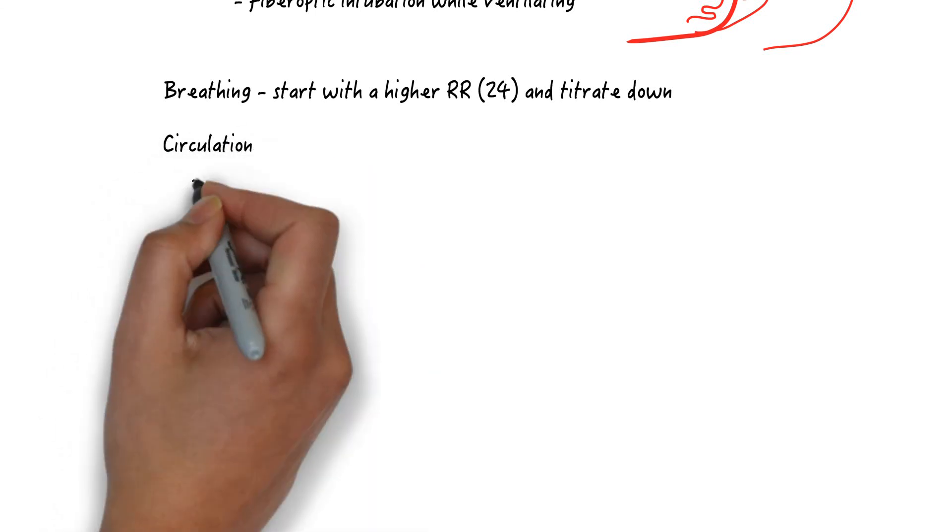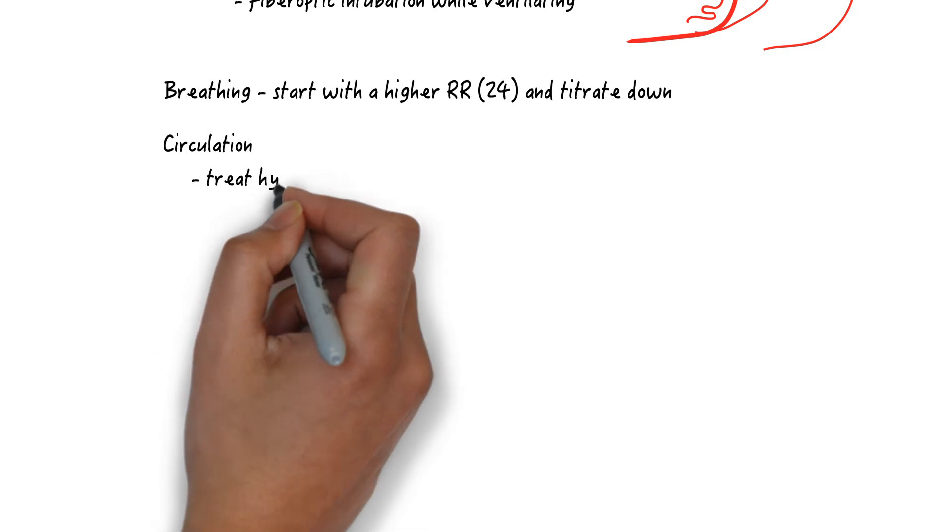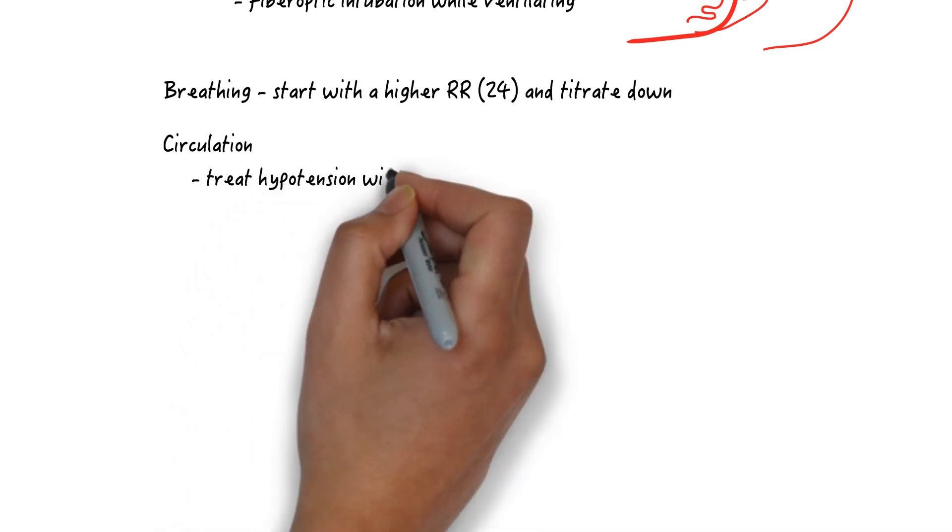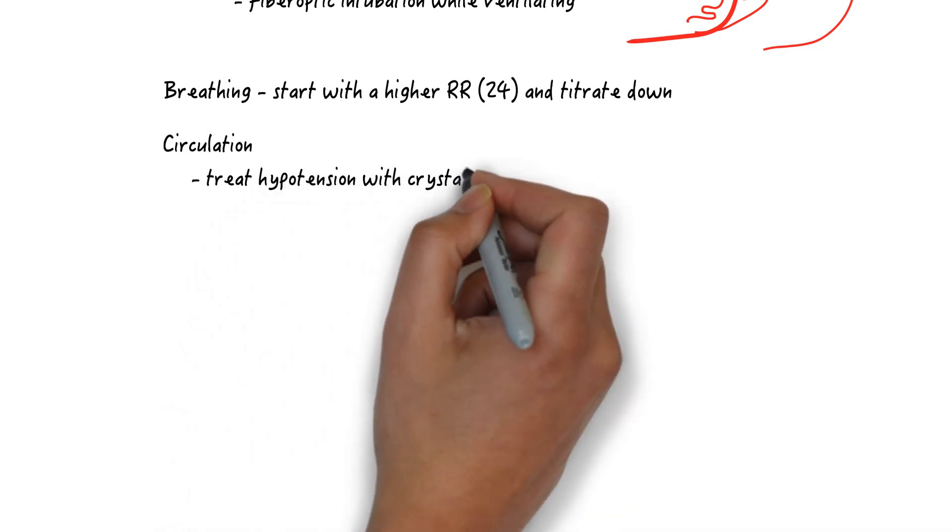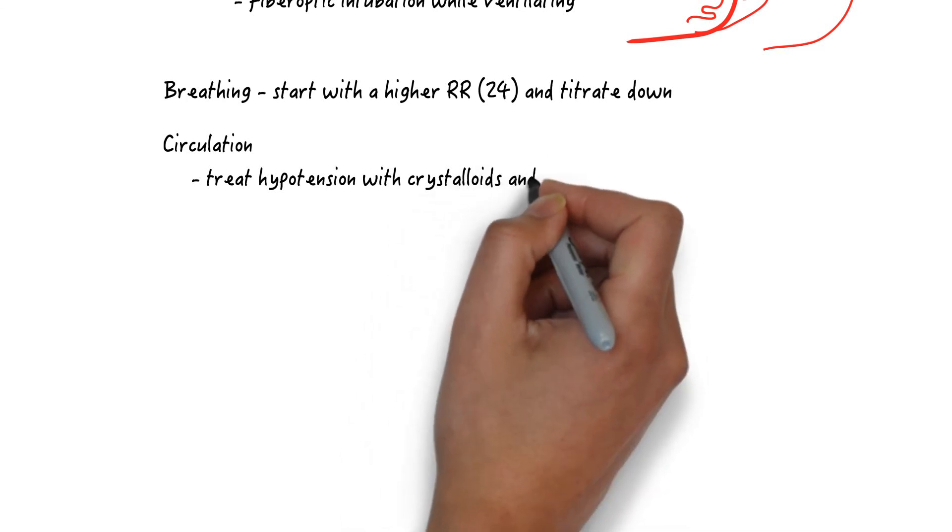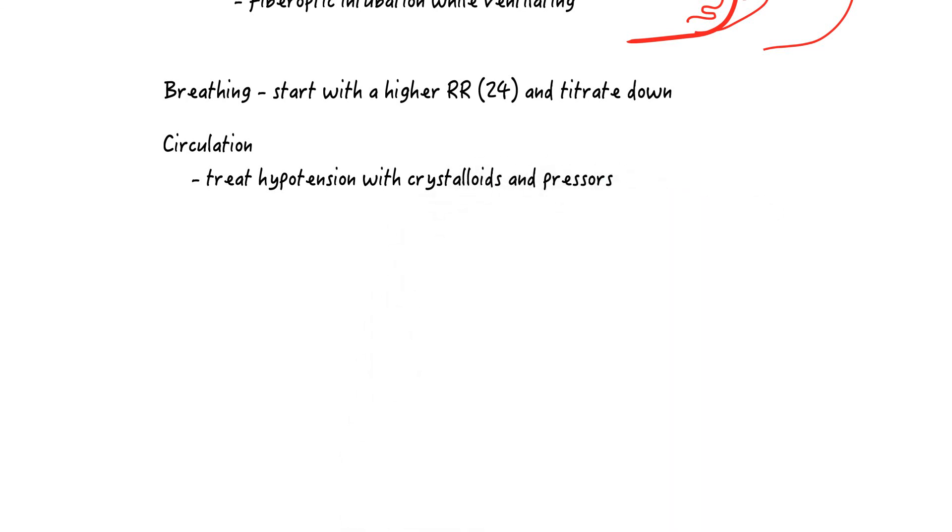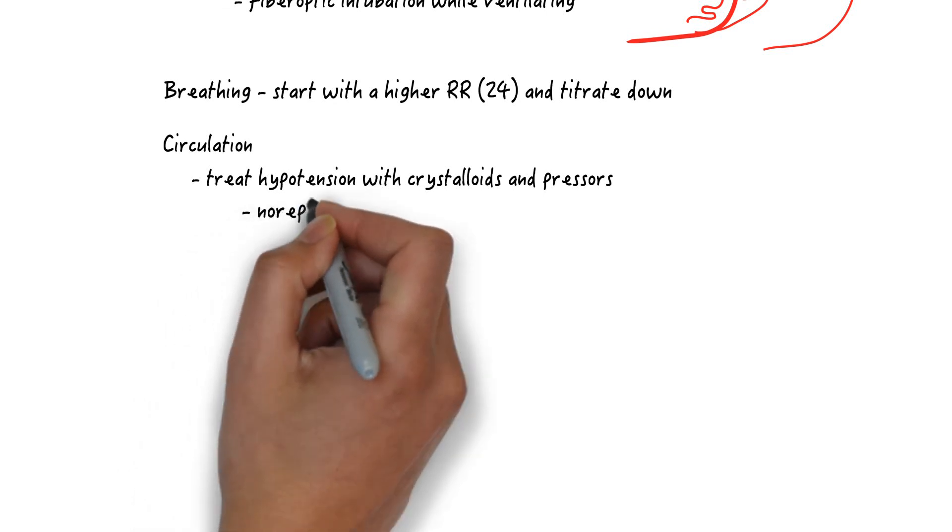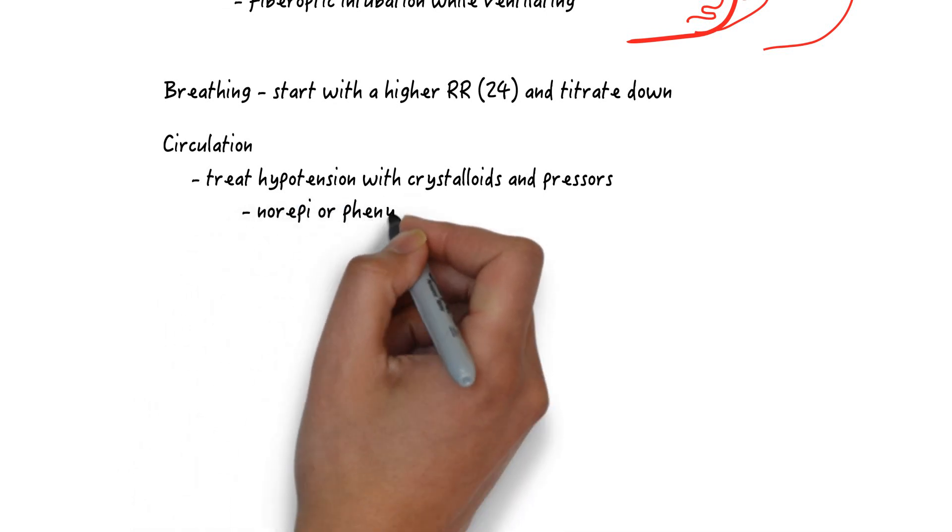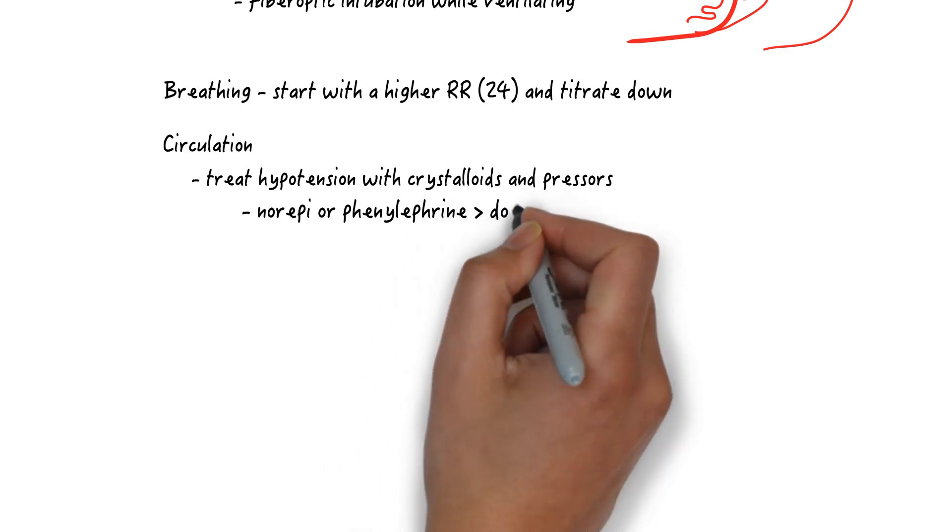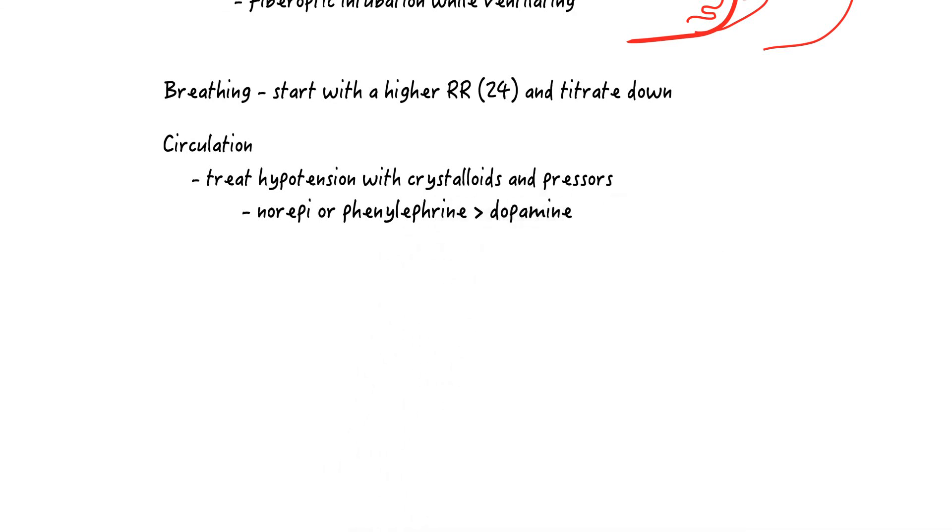For circulation, give fluids for hypotension but remember that normal saline is acidotic. Also these patients are not in a fluid deficient state and they will likely receive an enormous amount of hypertonic sodium bicarbonate which will increase the intravascular volume. Go to pressors early for hypotension. Remember the hypotension is from alpha blockade and these patients are tachycardic to begin with, so phenylephrine makes the most sense but norepinephrine is also okay especially if you are more familiar with this drug.